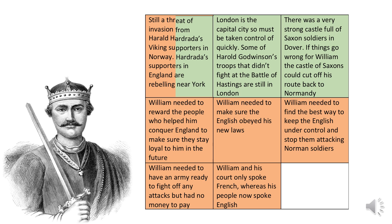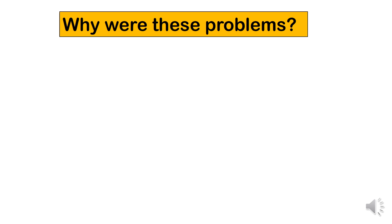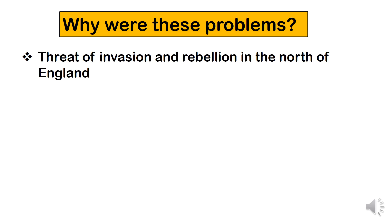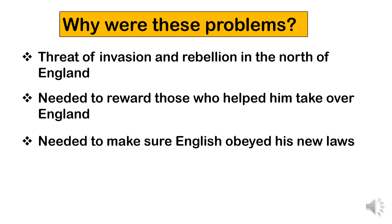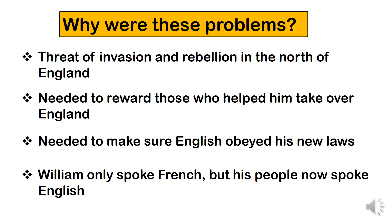Now let's look at task two: why were these problems? There was a threat of invasion and rebellion in the north from Vikings and people already living in England. He needed to reward those who helped him take over. He needed to make sure the English obeyed his new laws — if people didn't follow them, he couldn't really call himself king. And finally, William only spoke French while his people spoke English, creating a big communication problem between William and the people he was ruling.